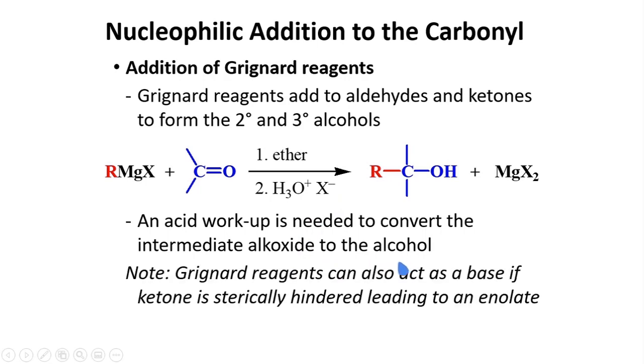Take note that Grignard reagents can also act as a base if the ketone is sterically hindered, leading to an enolate. I will describe enolates in another video.